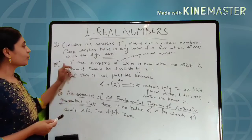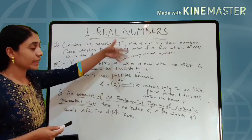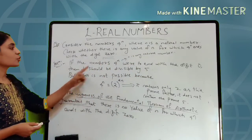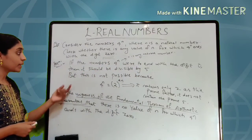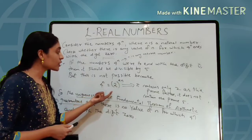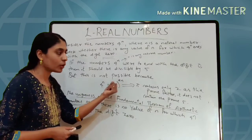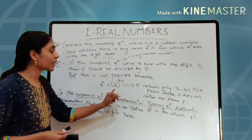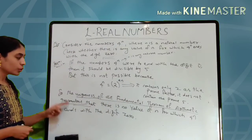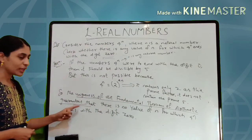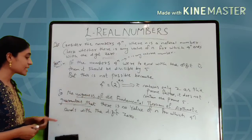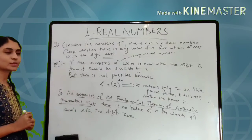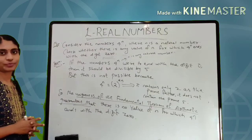So the uniqueness of the fundamental theorem of arithmetic guarantees that there is no value of N for which 4^N ends with the digit 0.